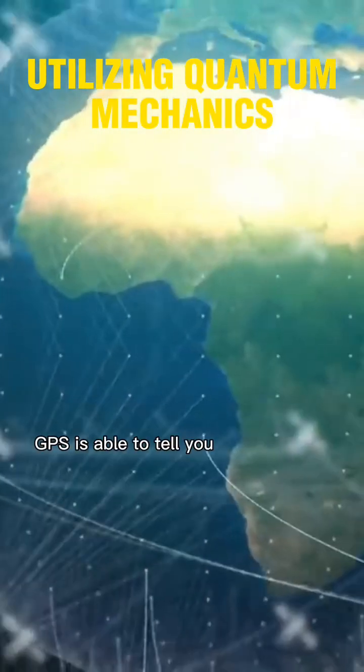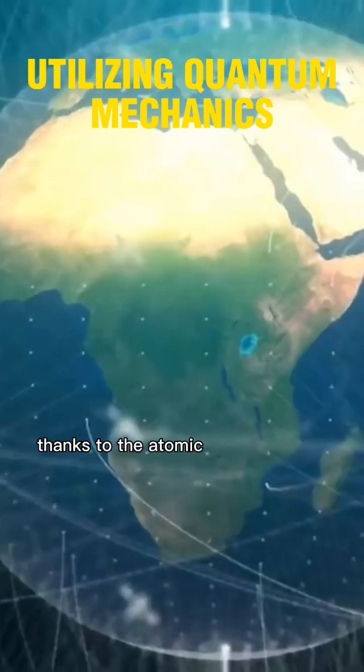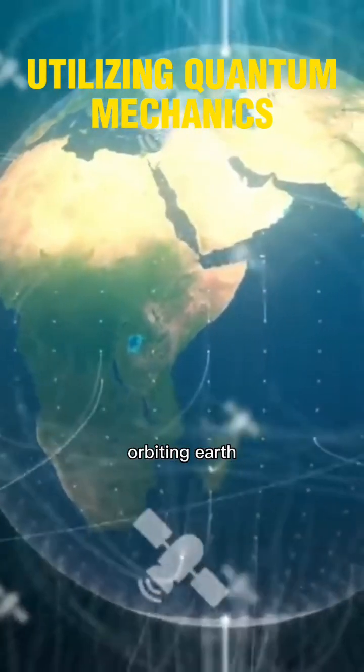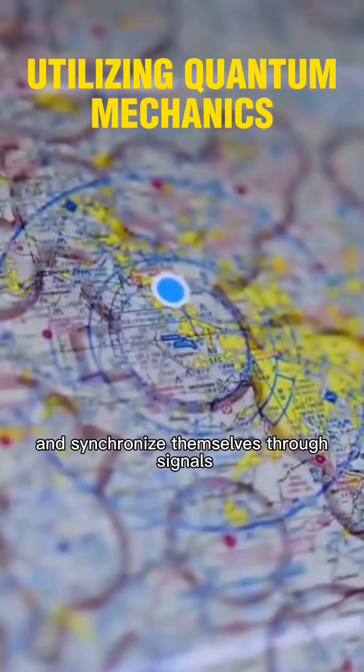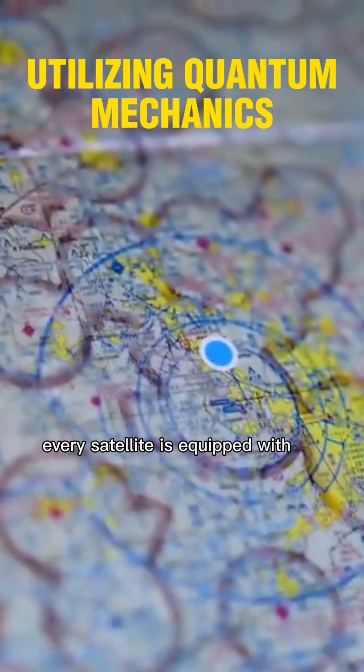GPS is able to tell you exactly where you are thanks to the atomic clocks aboard satellites orbiting Earth, which are set by ground control stations and synchronize themselves through signals. Every satellite is equipped with an atomic clock.